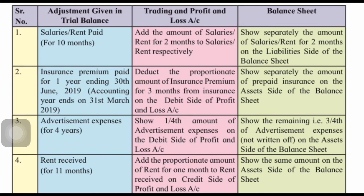Second example: insurance premium paid for one year ending 30th June 2019, but the accounting year ends on 31st March 2019. You have paid extra — for how many months? From 31st March to 30th June: April, May, June — 3 months extra. So whatever amount is given in the trial balance, divide by 12 and multiply by 3. That gives your prepaid insurance. For prepaid expense, deduct it from insurance premium in profit and loss account debit side, and show prepaid insurance on the balance sheet asset side.